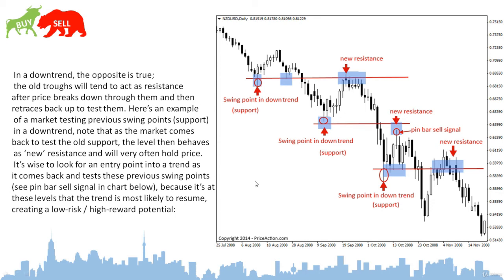In this example we can see how the market reacts to support and resistance. We have a downtrend with a swing point that becomes a support, then breaks down to become a resistance. We have another support that becomes a resistance. This is how the market works.